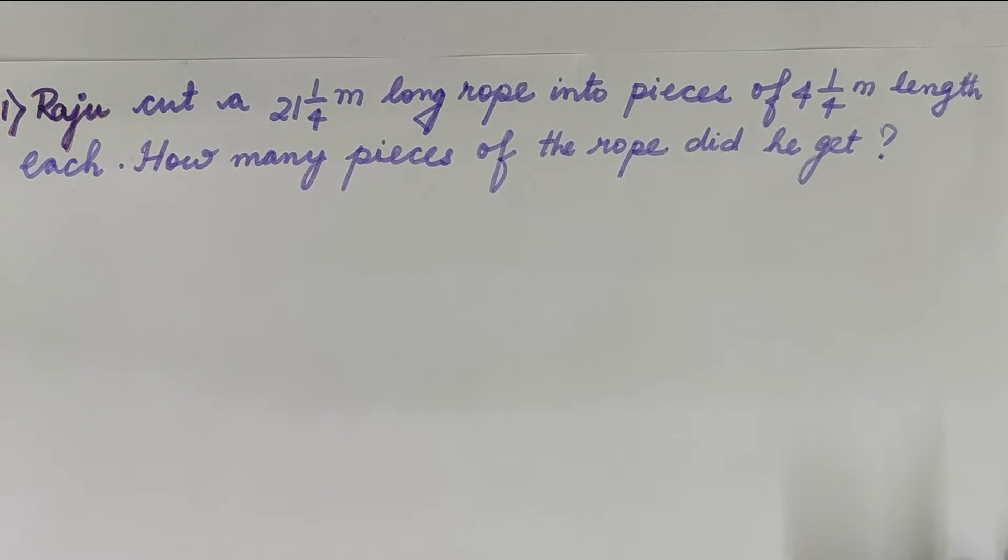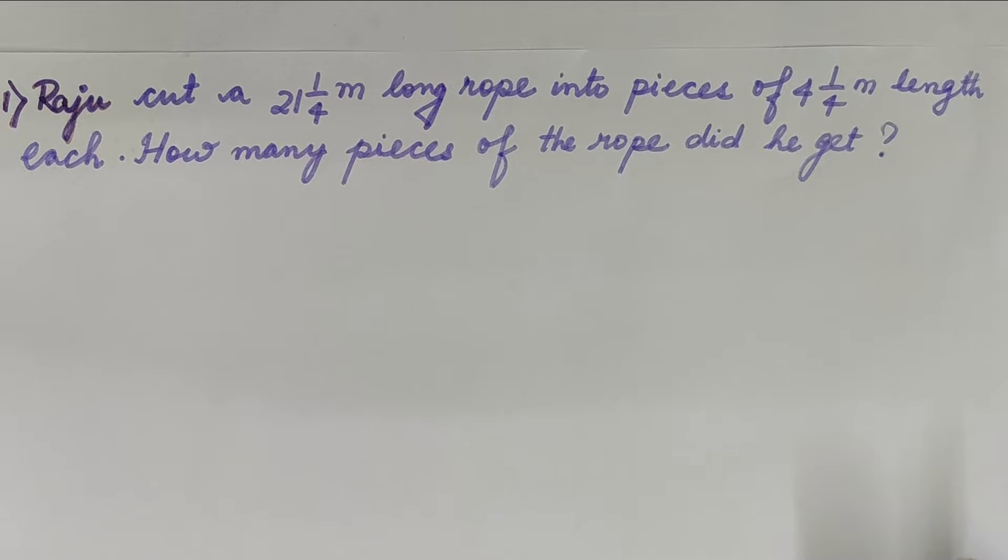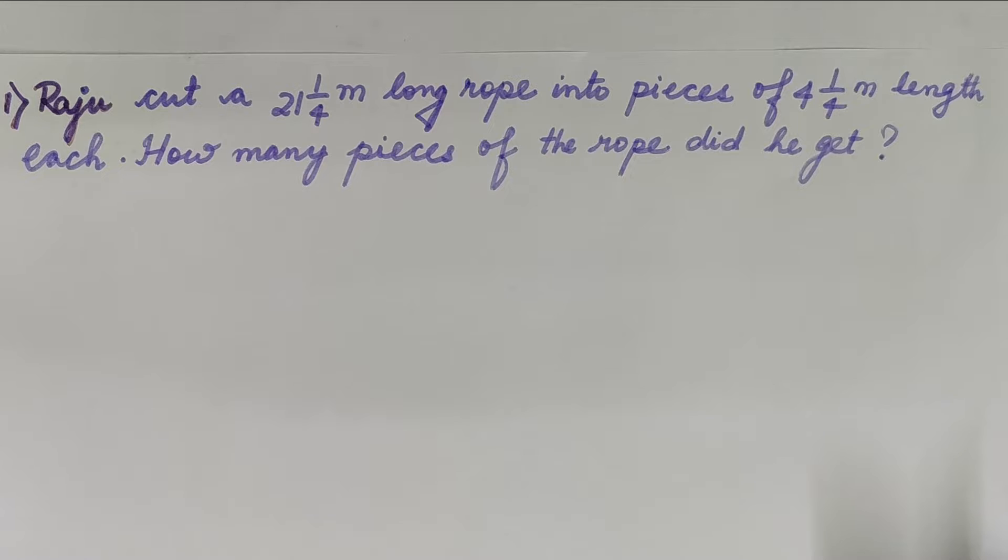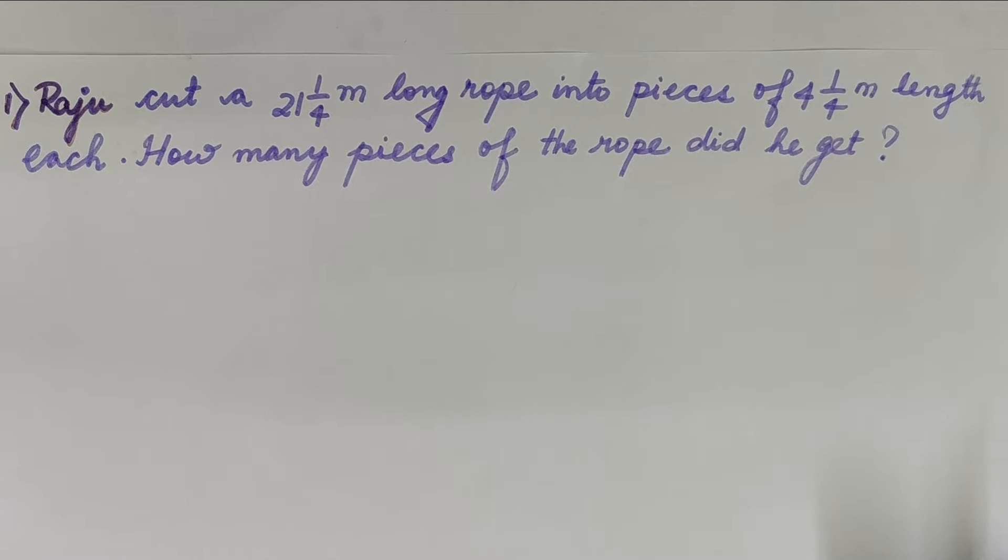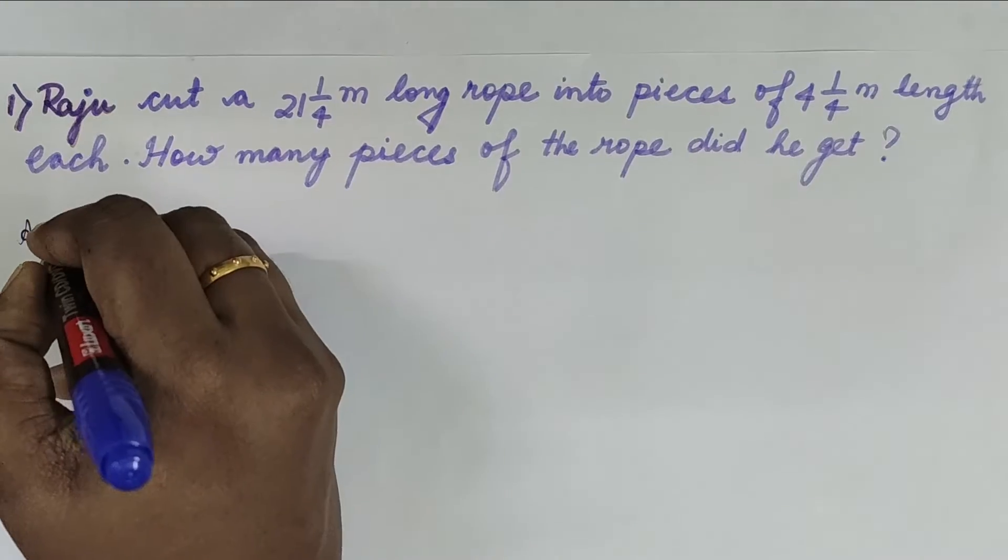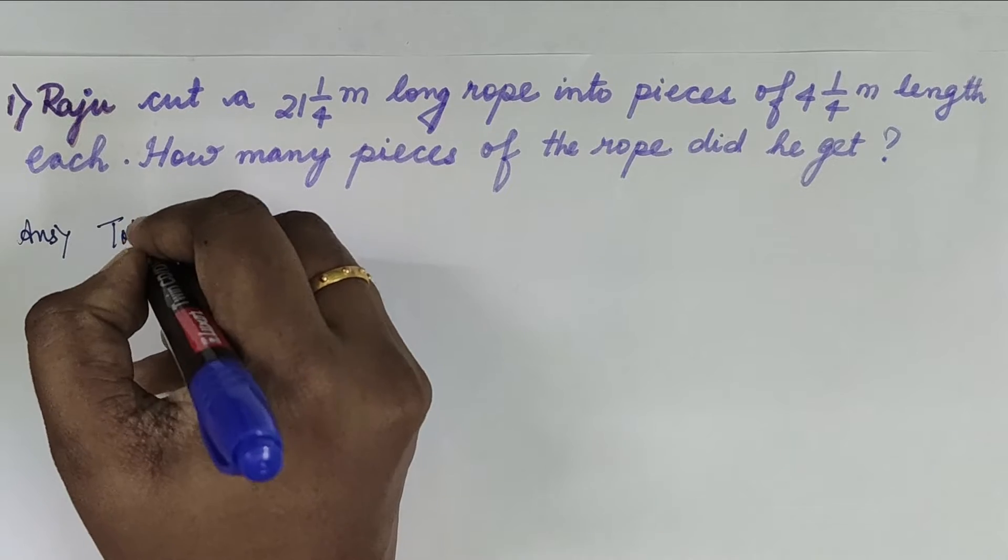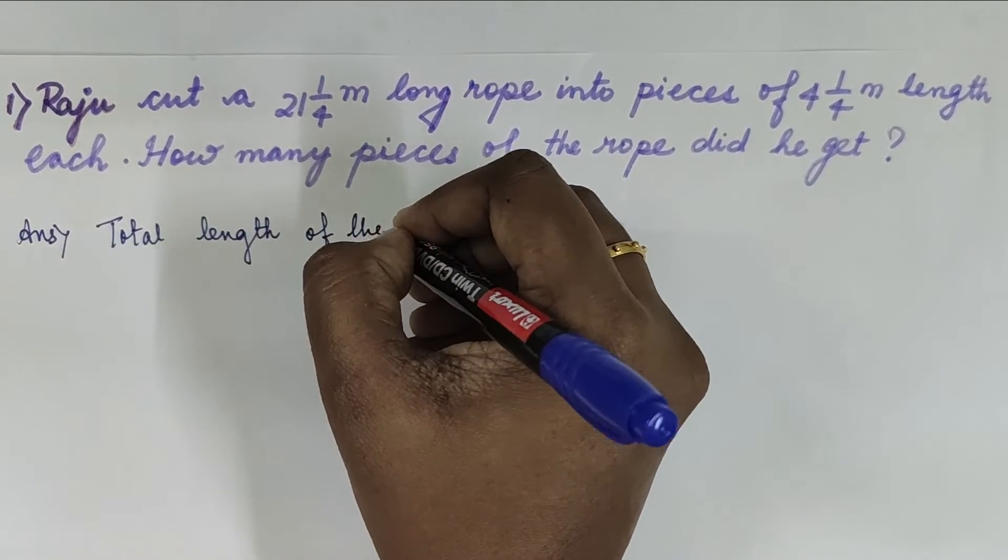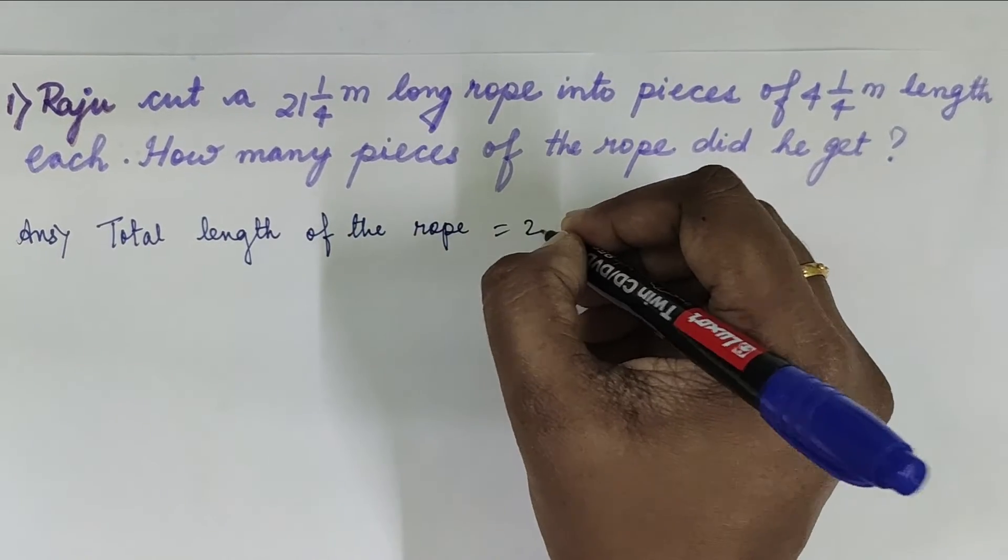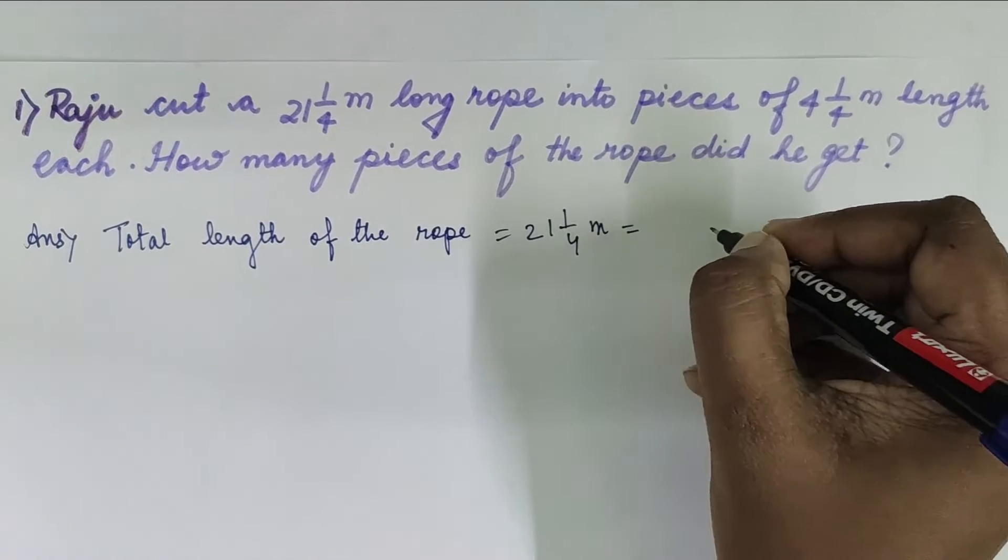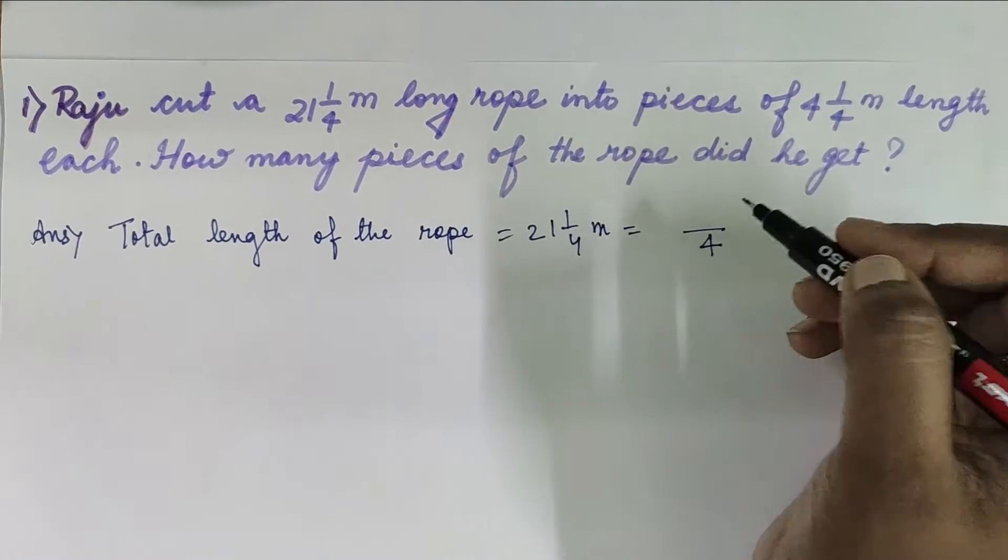As you can see, the first question: Raju cuts 21 1/4 meter long rope into pieces of 4 1/4 meter length each. How many pieces of the rope did he cut? So what is the information given? It is the total length of the rope. Let us answer: total length of the rope is 21 1/4 meter which is equal to, we'll convert into improper fraction, so that is 85/4 meter.